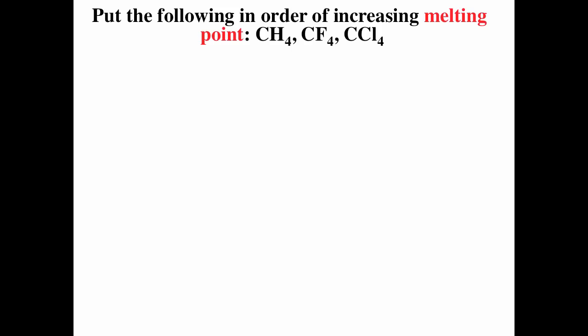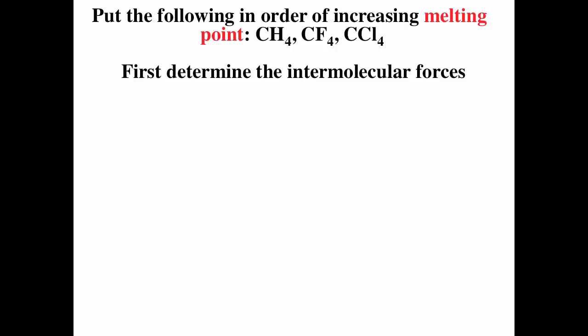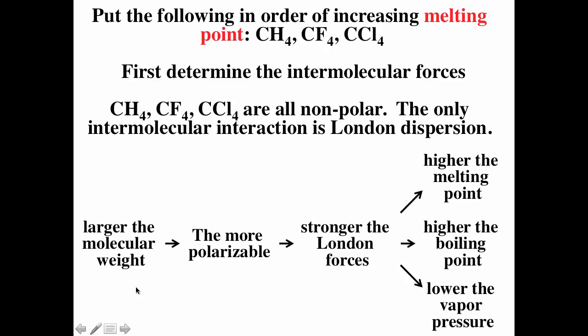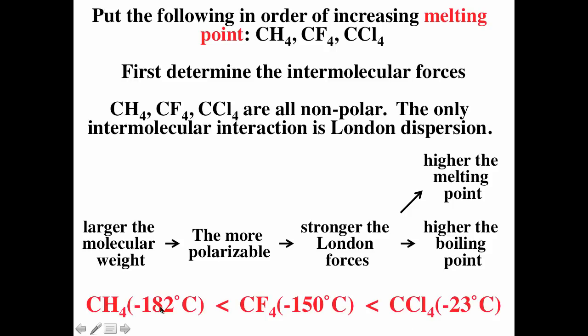A practice question: put the following in order of increasing melting point. First, determine the intermolecular forces. Each compound has two nonmetals, so these are molecular species. Drawing the Lewis diagrams, we find they are all nonpolar — when a central atom is surrounded by the same type of outer atoms with no lone pair on the center, the molecule is nonpolar. So the only intermolecular force is London dispersion. The larger the molecular weight, the more polarizable, the stronger the London dispersion, and the higher the melting point. Methane has the weakest intermolecular forces because it has the lowest mass; carbon tetrachloride has the largest London dispersion forces and thus the highest boiling and melting points.